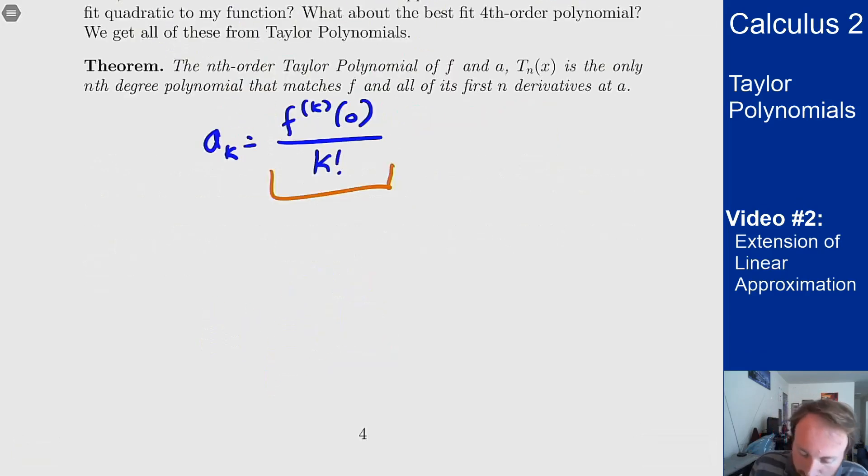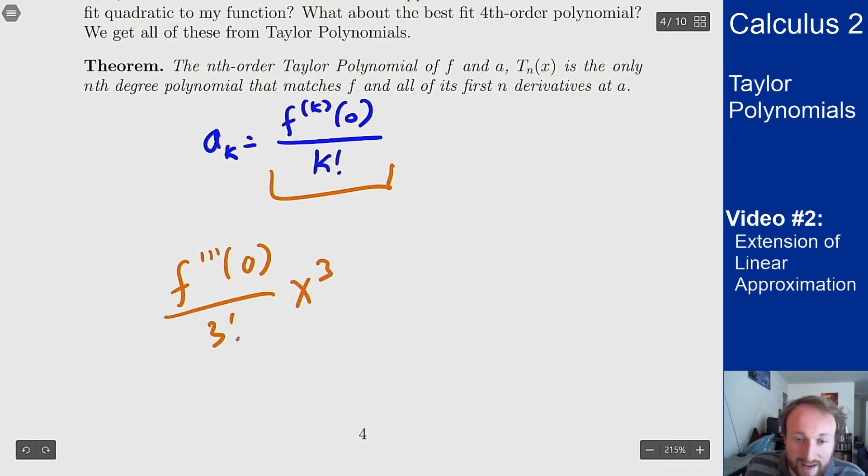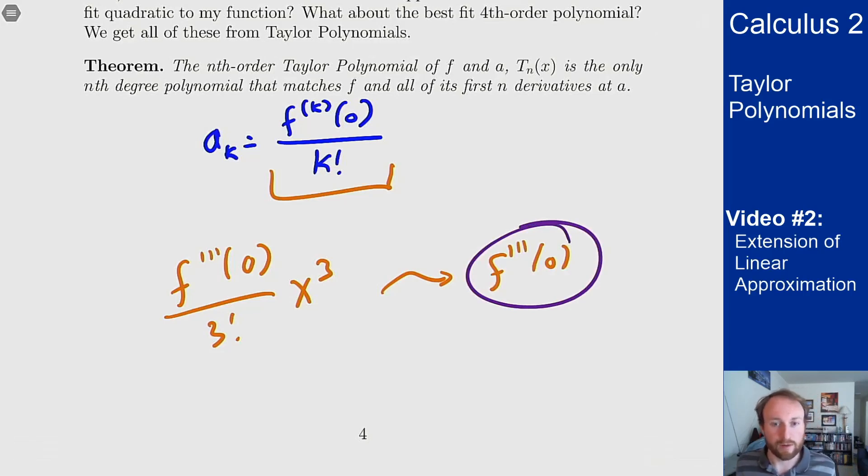If my term involves f triple prime at 0 over 3 factorial times x cubed, when I take three derivatives this reduces to just f triple prime at 0, which when I plug in 0 gives me exactly the value I want. This works for all the different derivatives and all the different Taylor polynomials—that's how and why they're defined this way.